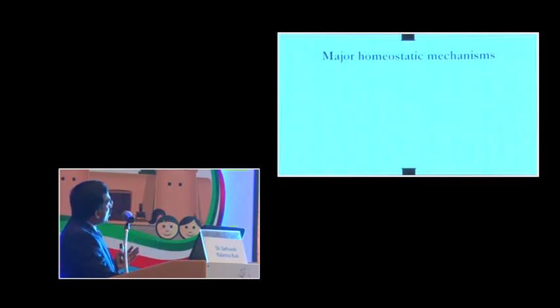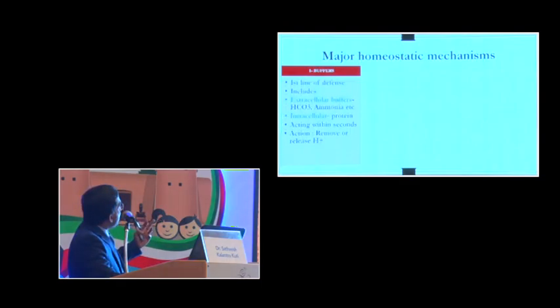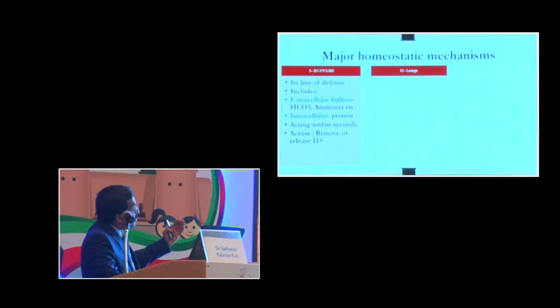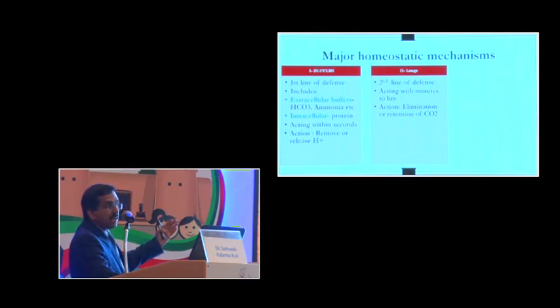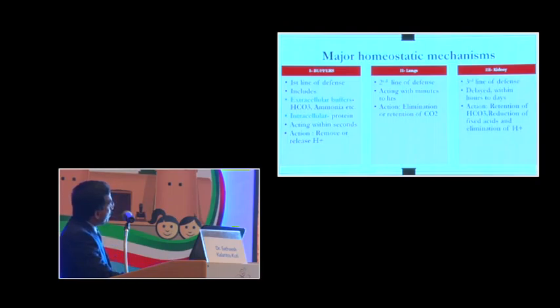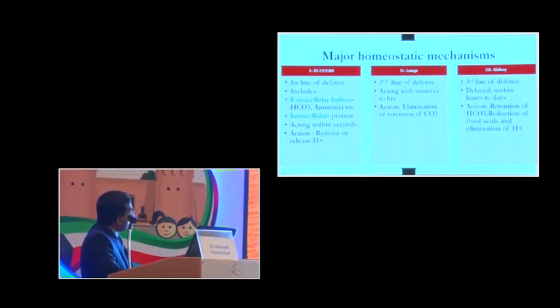When the pH is deranged, you have three mechanisms that come into vogue. The first defense line is your buffers, which include extracellular buffers like bicarbonate and ammonia, and intracellular buffers like protein. They act within seconds by removing or releasing H plus ions. The second defense is your lungs, acting within minutes to hours through elimination or retention of CO2. The third defense is your kidney, delayed within hours to days, with action of retention of bicarbonate or reduction of fixed acids.